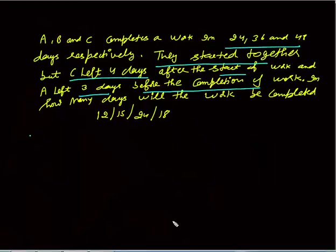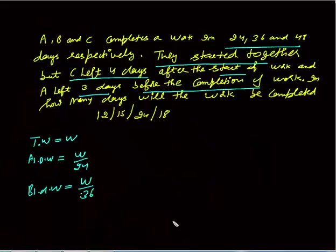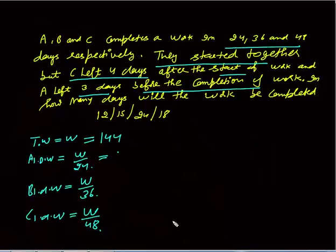Let's assume total work W equals 144, which is the LCM of 24, 36, and 48. We take the LCM to avoid fractions. So A's one-day work is 144 divided by 24, which is 6. B's one-day work is 144 divided by 36, which is 4. And C's one-day work is 144 divided by 48, which is 3.